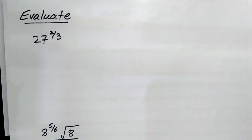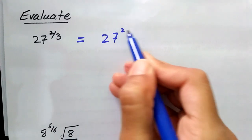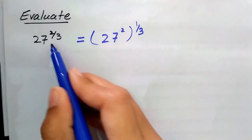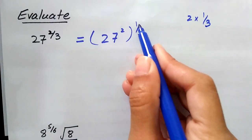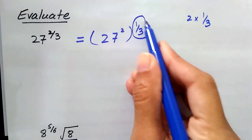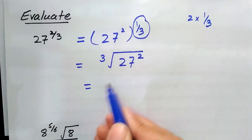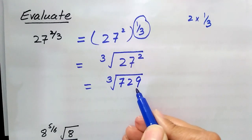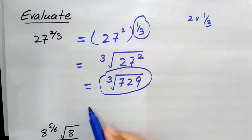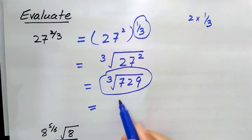Consider this example: evaluate and simplify 27 raised to power 2/3. We separate the rational exponent: 2/3 equals 2 times 1/3, giving 27 squared raised to exponent 1/3. Since exponent 1/3 is the cube root, this becomes the cube root of 27 squared. 27 squared is 729, and the cube root of 729 equals 9.